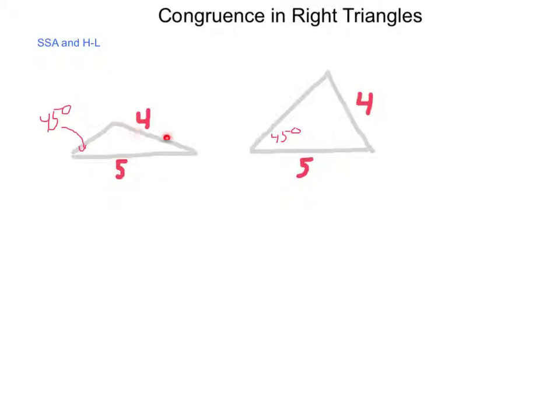We have sides of length 4 that are congruent, and sides of length 5 that are congruent, and then an angle of 45 degrees in both cases. The thing is, these are not congruent triangles.